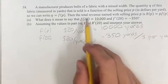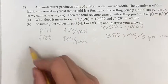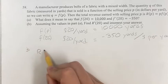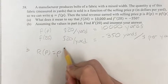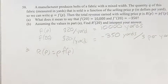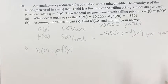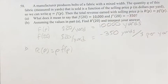So we're also given that the total revenue earned is given by this function R of P equals P times F of P, and we're asked to find the value of the derivative of R when P is equal to 20.